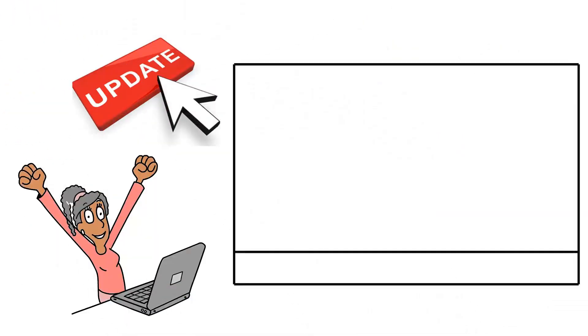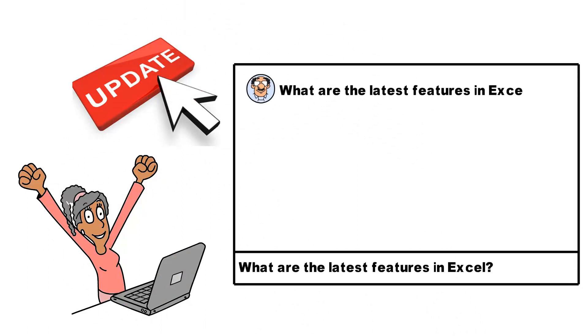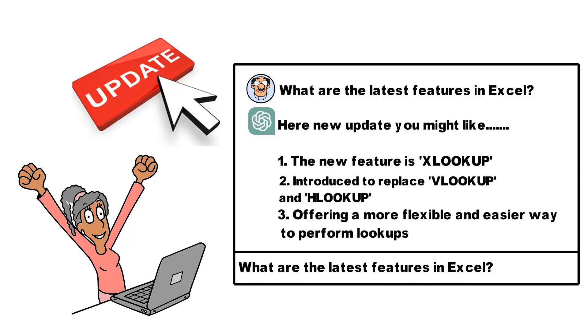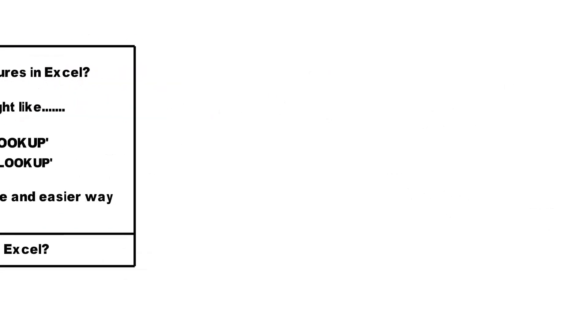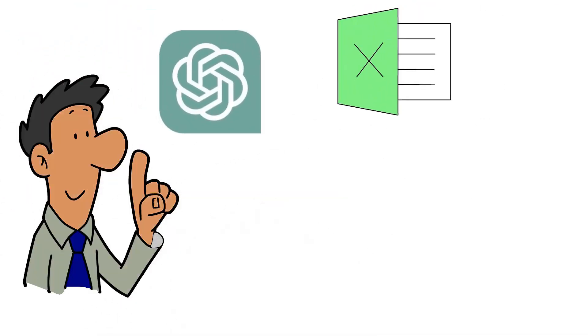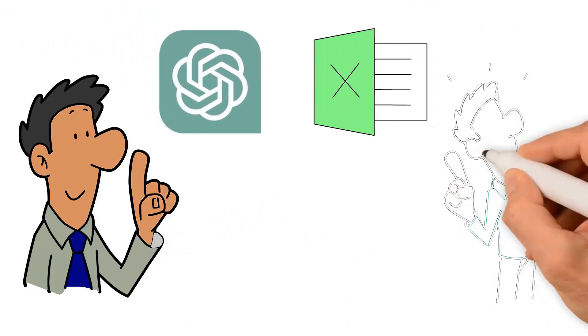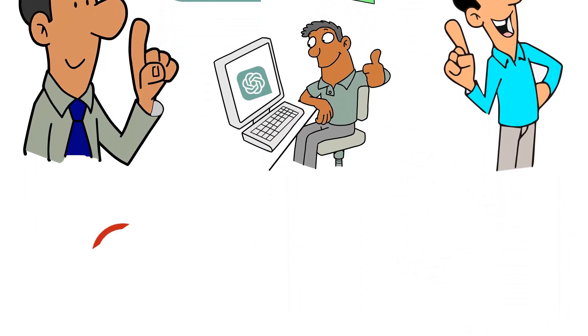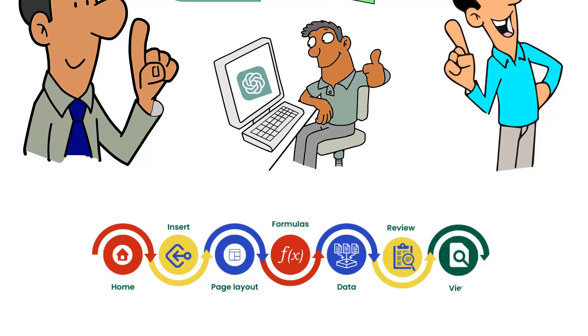As for staying updated, asking what are the latest features in Excel might lead ChatGPT to explain a new feature, X-Lookup, introduced to replace V-Lookup and H-Lookup, offering a more flexible and easier way to perform lookups. These examples illustrate the potential of ChatGPT as an Excel guide, showing how it can facilitate your understanding, improve your efficiency, and help you stay updated with the latest Excel tools and features.